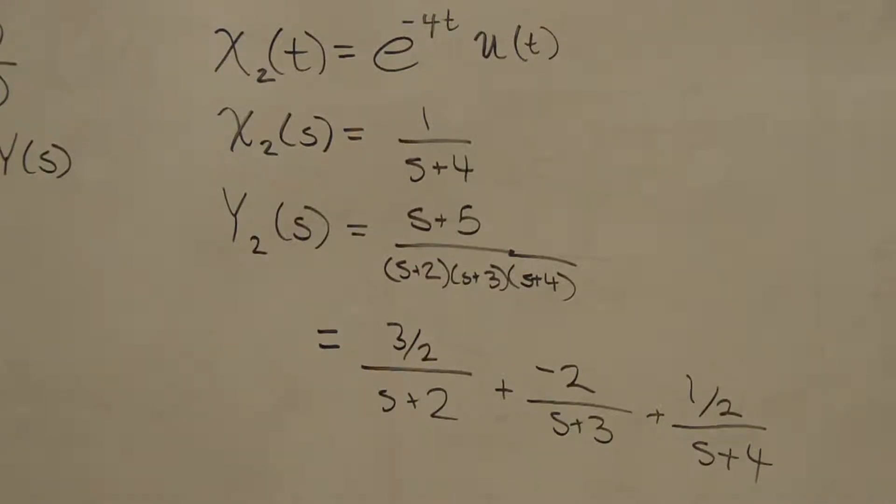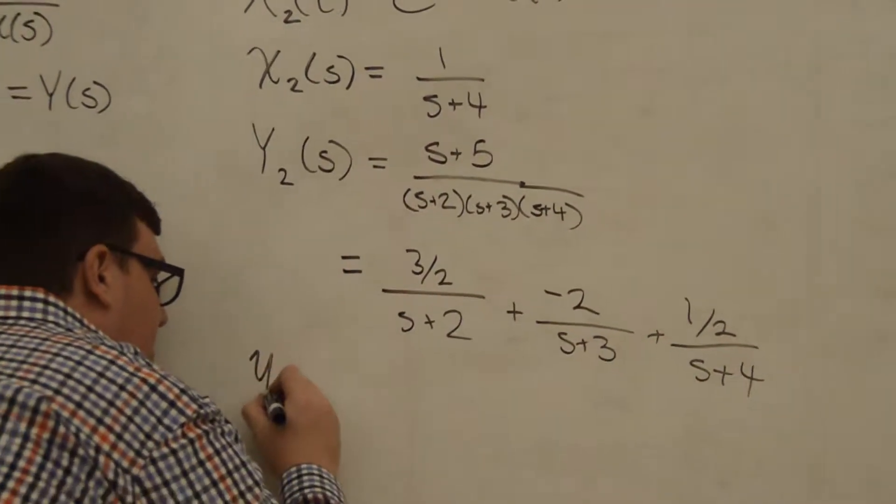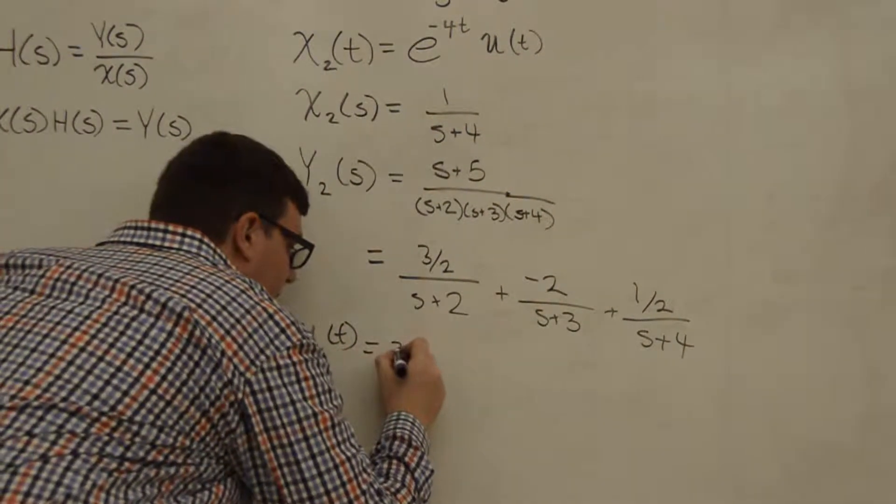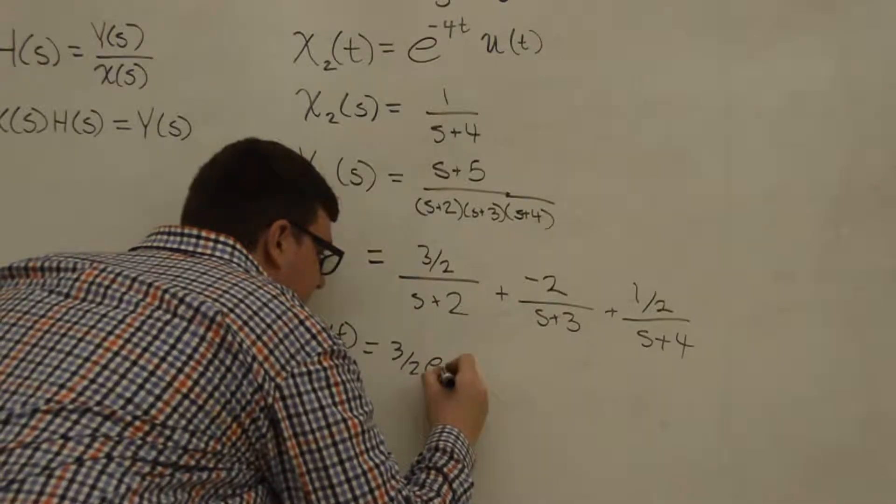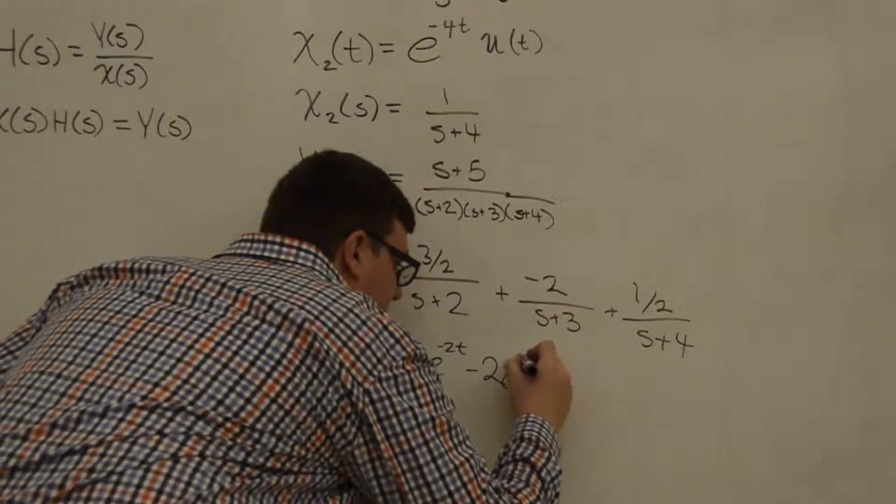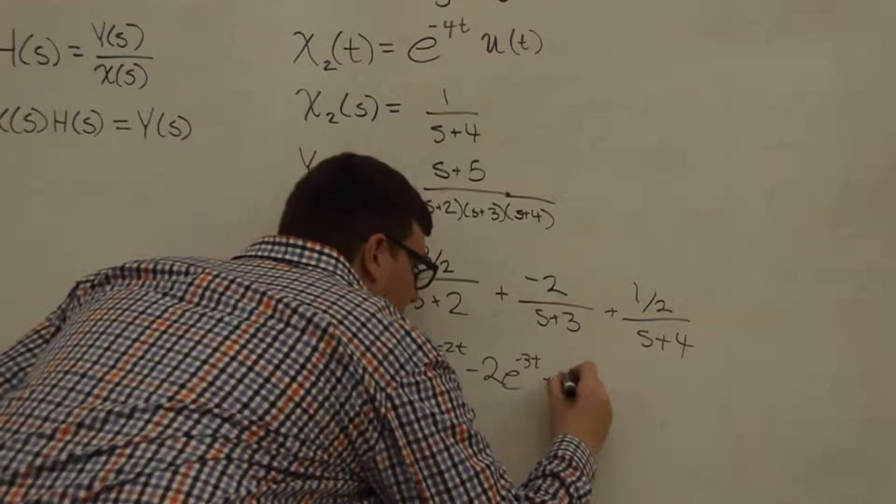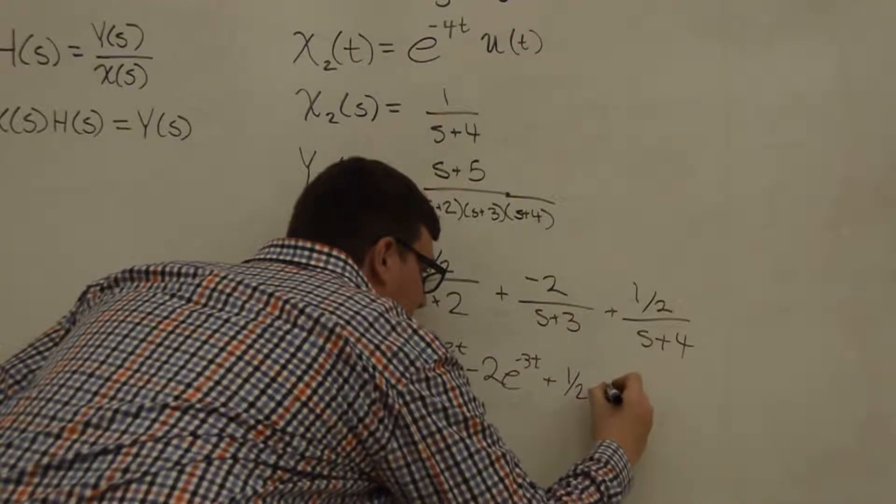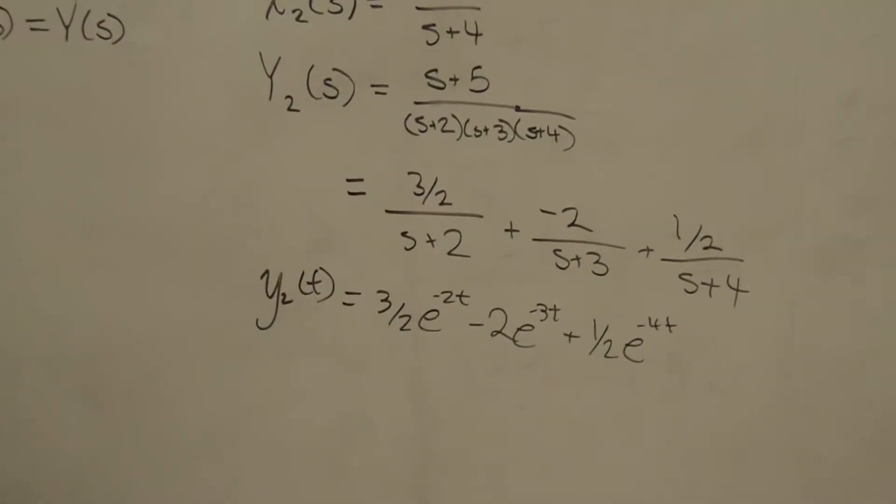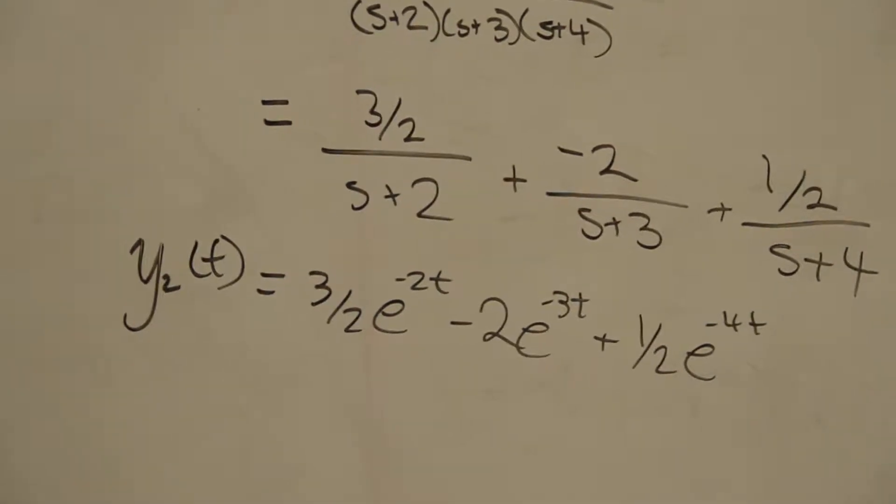And this is again in a form that we are easily capable of taking an inverse Laplace transform of, and so we end up with Y₂(t), our second output, equaling (3/2)e^(-2t) - 2e^(-3t) + (1/2)e^(-4t). And so that's our second response.